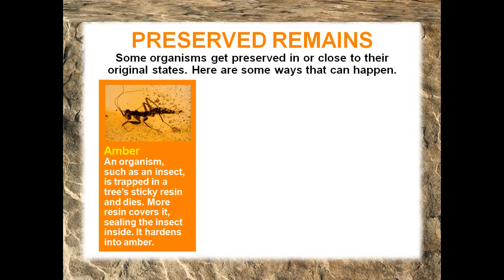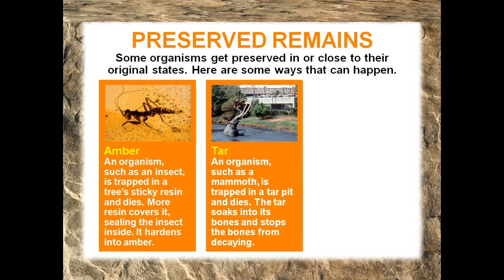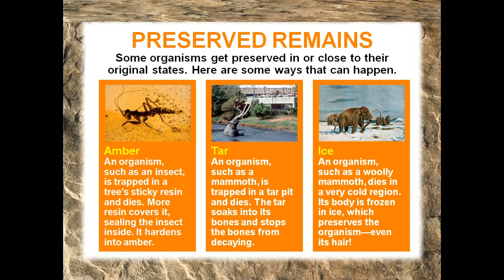Preserved remains: in amber, an organism such as an insect is trapped in a tree's sticky resin and dies. More resin covers it, sealing the insect inside, and it hardens into amber. In tar, an organism such as a mammoth is trapped in a tar pit — the tar soaks into its bones and stops them from decaying. In ice, an organism such as a woolly mammoth dies in a very cold region and its body is frozen in ice, which preserves the organism, even its hair.